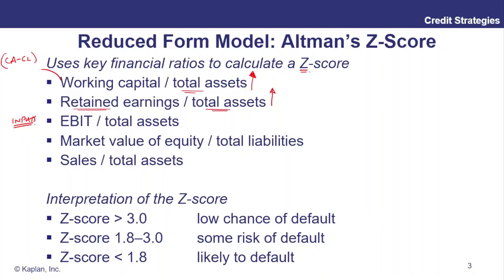Then you've got retained earnings in equity versus total assets — the higher that is, the more of your earnings you're holding back rather than paying out as dividend, so the more firepower in the firm. Then EBIT over total assets — that's your operating return on assets; the higher that is, the more profitable you are. Sales over total assets is your total asset turnover — the higher this is, the more productive you are. And then market value of equity versus book value of total liabilities — the higher this is, the more valuable the market thinks your company is per unit of debt.